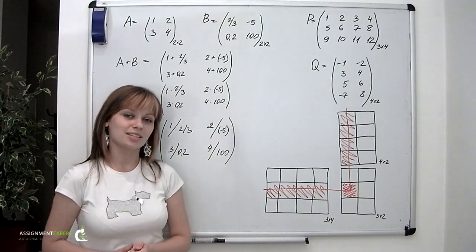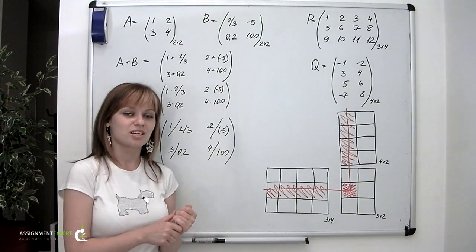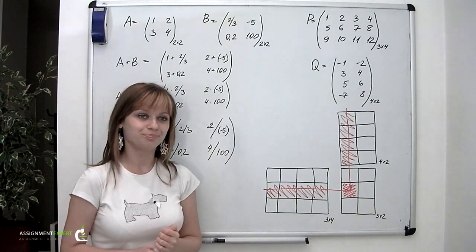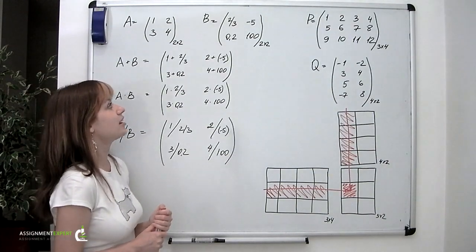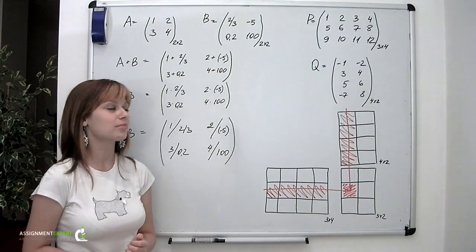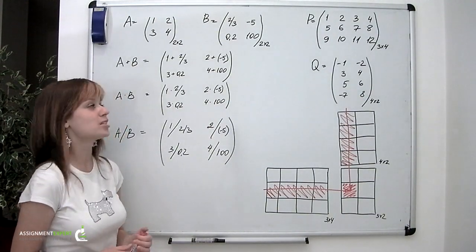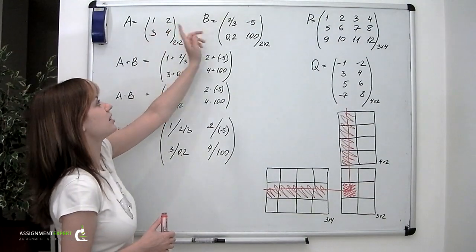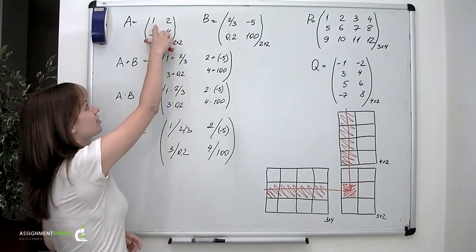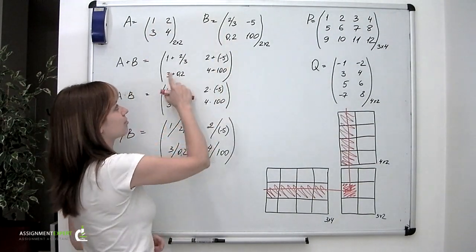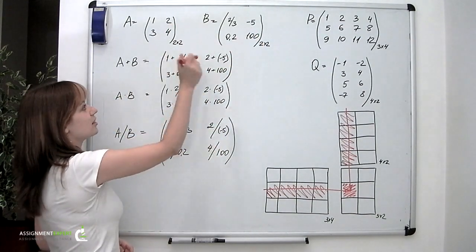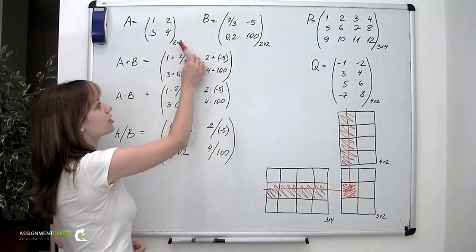Now if matrices are of the same size, we can easily define their sum or difference, simply by adding or subtracting the corresponding entries. As we can see, matrices A and B are of the same size — they both contain two rows and two columns. Therefore we can easily define their sum. We take the numbers lying in the same positions and simply add them: 1 and 2/3, then 2 and minus 5, then 3 and 0.2, and then 4 and 100.